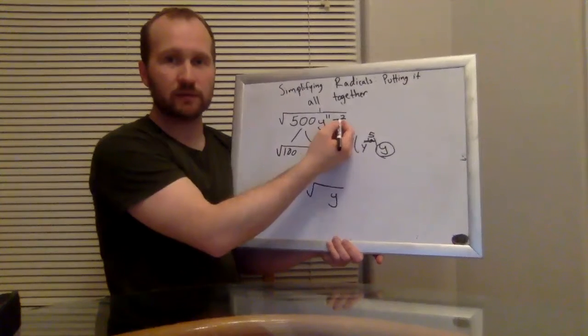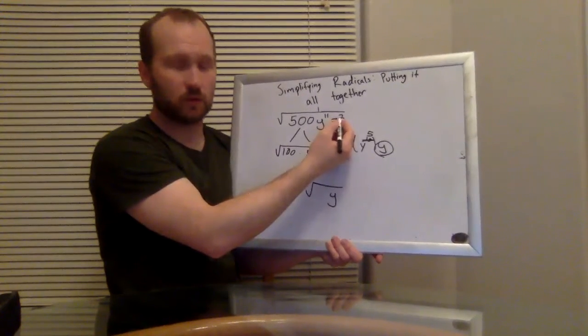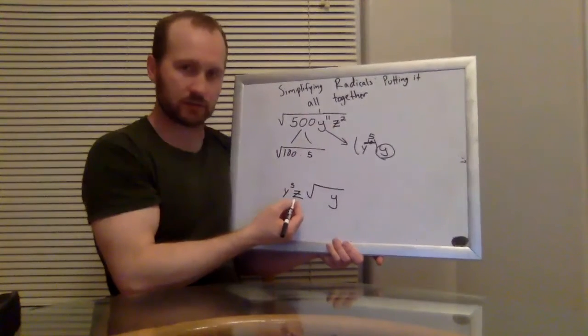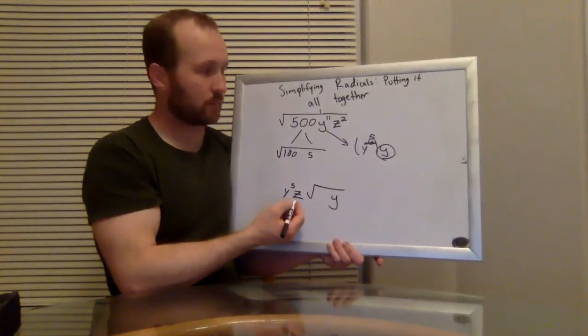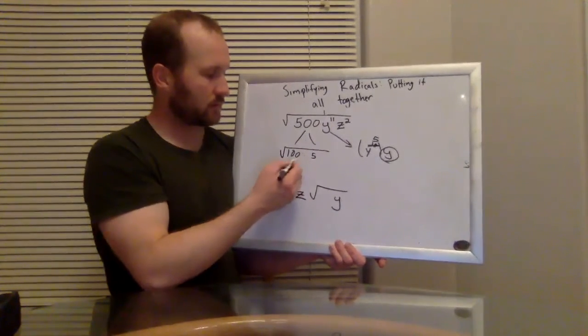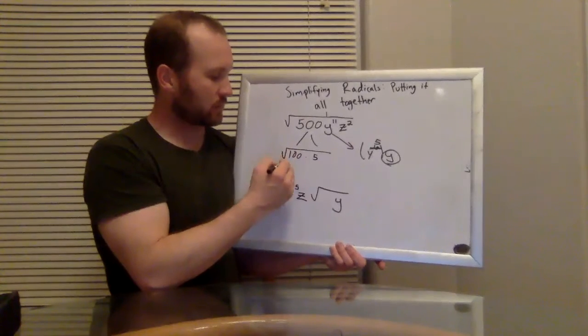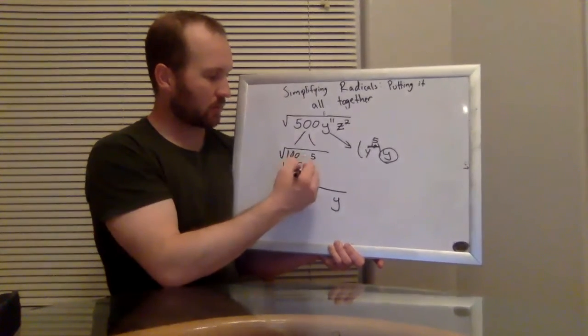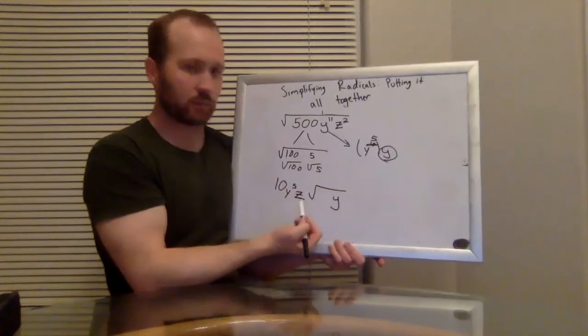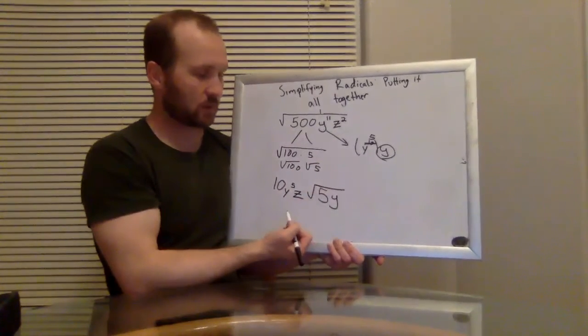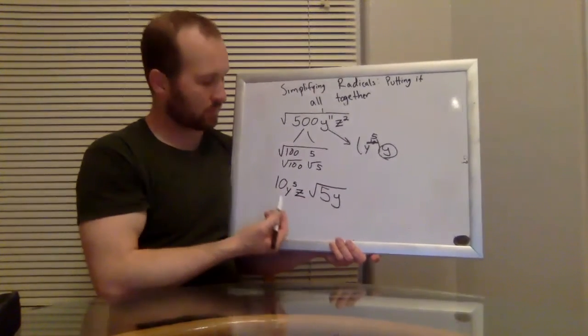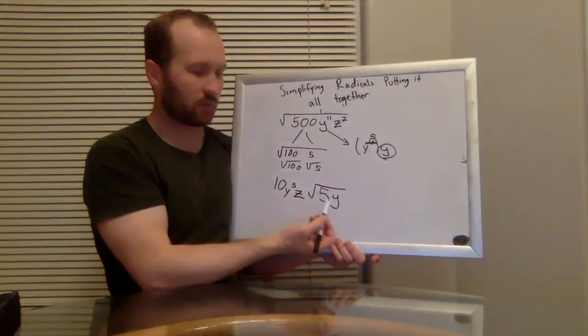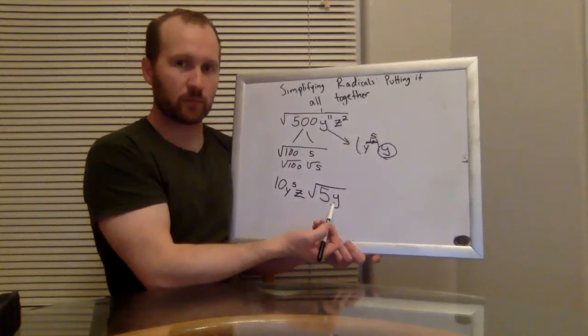OK, how about z? What's half of z squared or half of two? Well, that would just be z. So the square root of z squared is z. That comes out. All right, let's deal with these numbers up here. The square root of 100 is 10. And the square root of five is just the square root of five. So that stays inside of the square root. So I've got 10 y to the fifth times z times square root of five y.